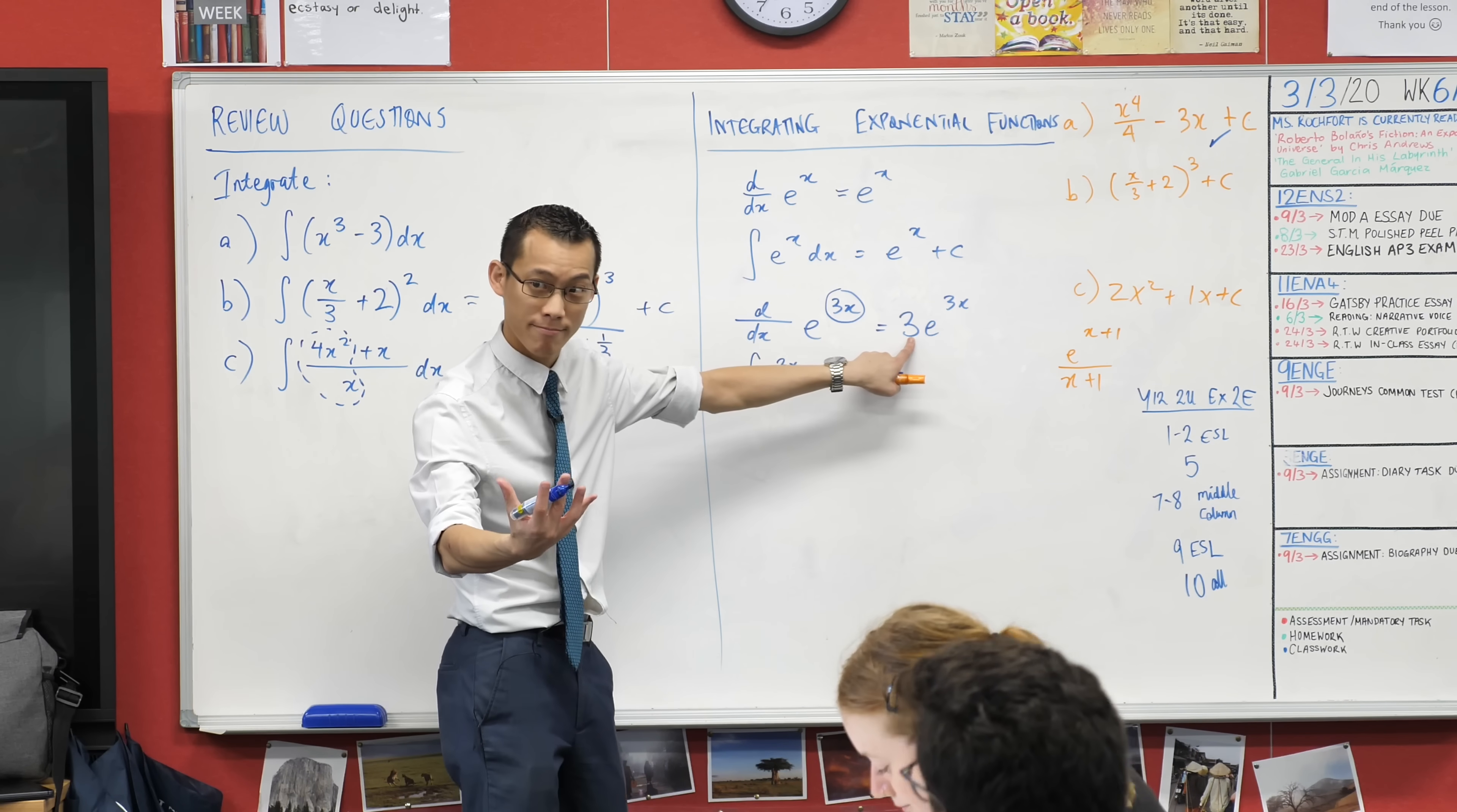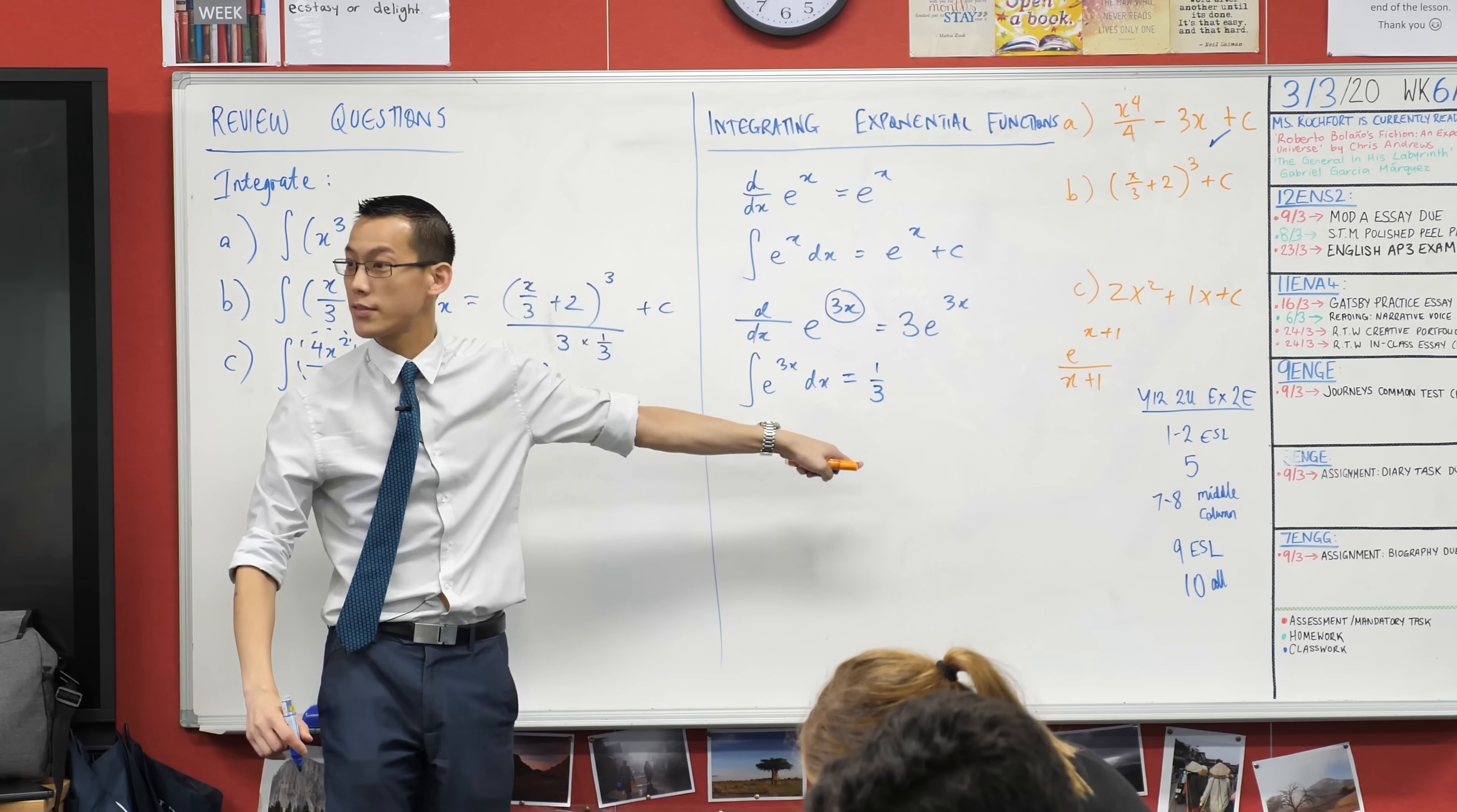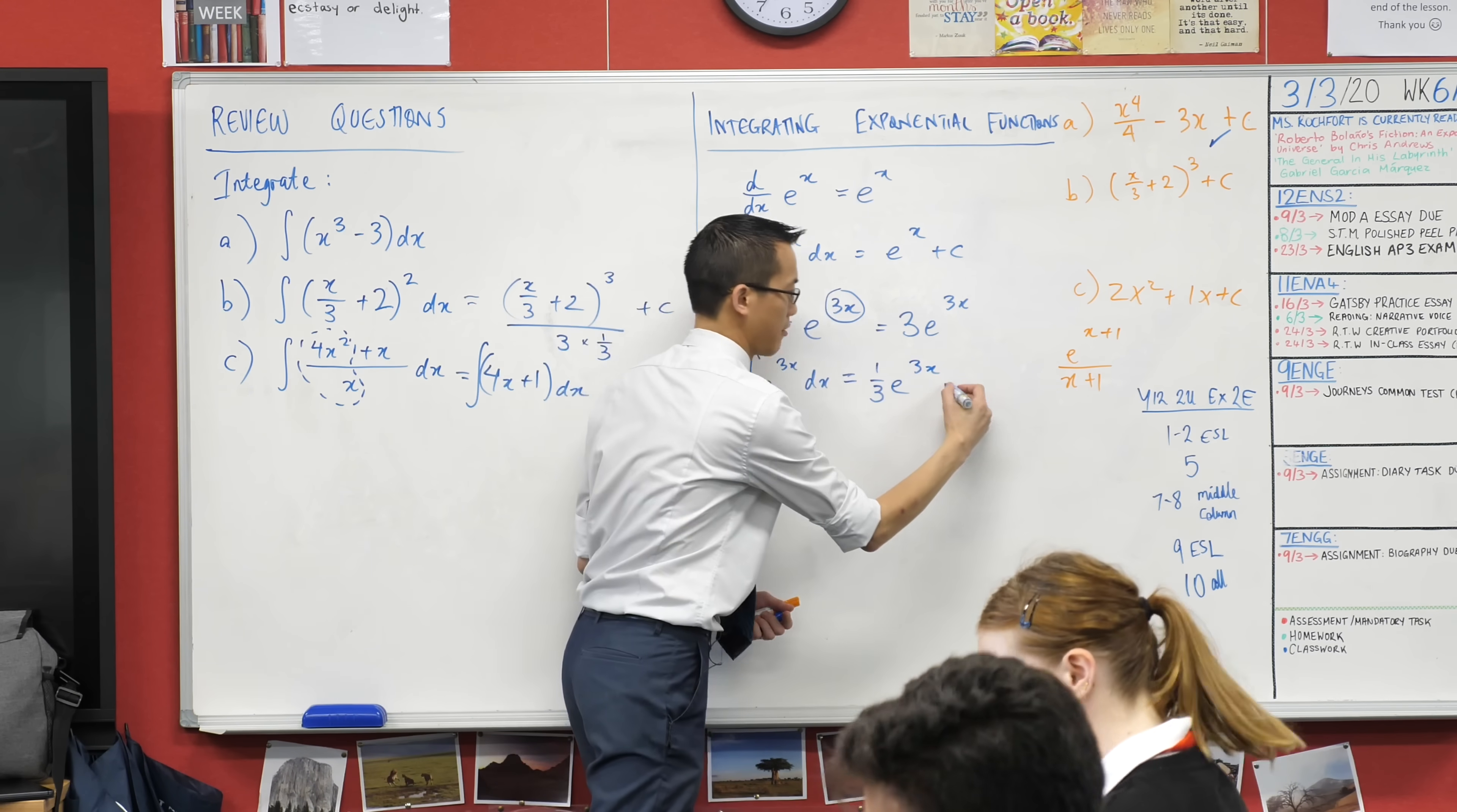Here I multiplied by the inside derivative. What do you think I should do here to undo that? I should divide. Division is the opposite of multiplication. So I'm dividing by what? Three. So I'll just write a third out the front. That's me dividing by three. And then I've got to deal with this. What happens to that exponential? It just comes back to being itself, right? So it's e to the 3x. And now because I'm integrating, constant integration.